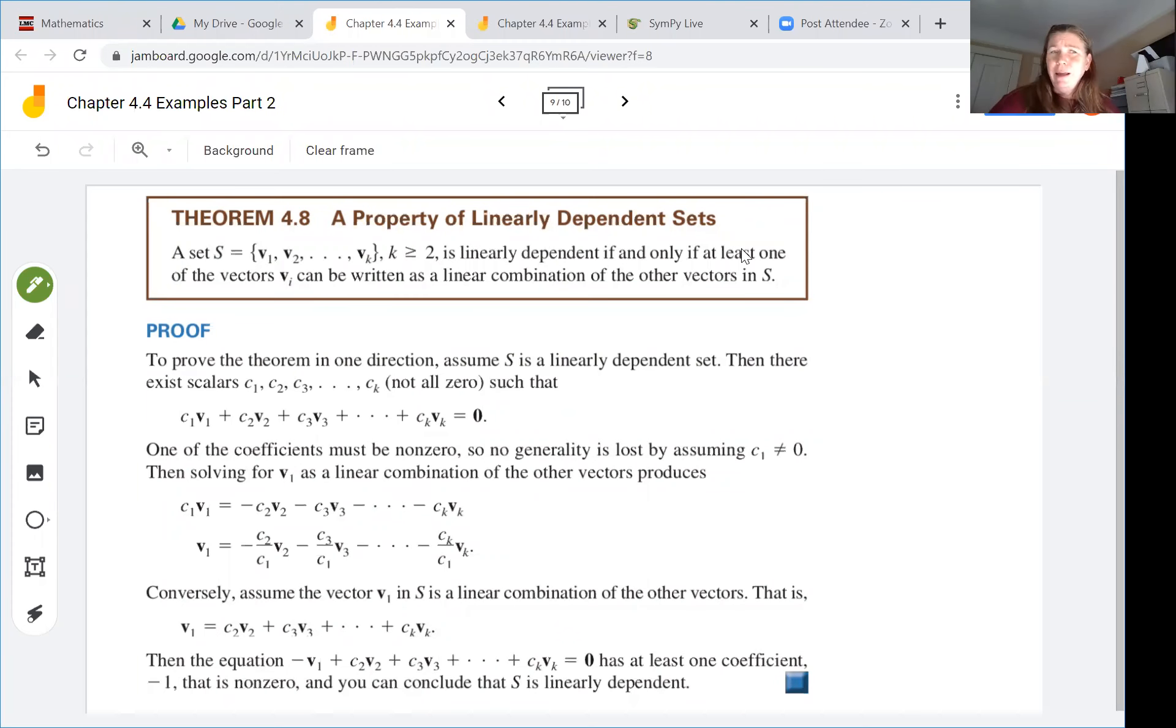In this video we continue with examples from chapter 4.4. We have looked through four examples showing how to check for linear independence or not and showing how to check if a set of vectors spans R3 or not. So now we are going to see theorem and related corollary.